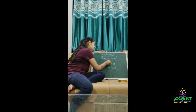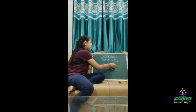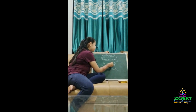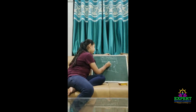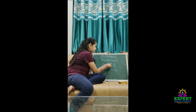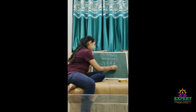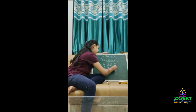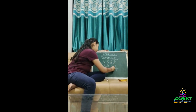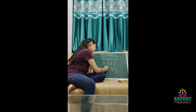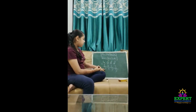Now we have to cut this 3-0 and instead of the first 0 we have to write 10, and instead of this 0 we have to write 9, and instead of this 0 we have to cut here. Because on this 0 also 10 comes but we have to carry them. So 10 minus 3 is 7, 9 minus 2 is 7, 9 minus 9 is 0, and 4 minus 2 is 2. So this is our answer.